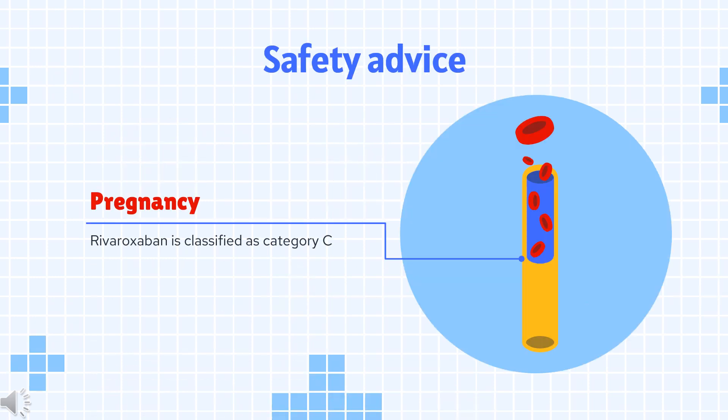Safety advice: Rivaroxaban, dabigatran, and edoxaban are FDA Category C, which states: 'Animal reproduction studies have shown an adverse effect on the fetus, and there are no adequate and well-controlled studies in humans, but potential benefits may warrant use of the drug in pregnant women despite potential risks.'